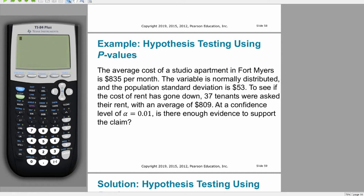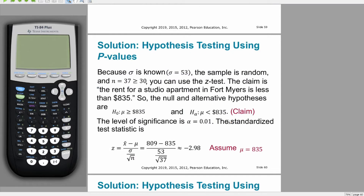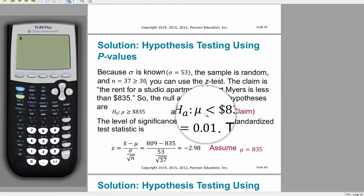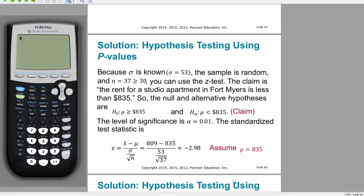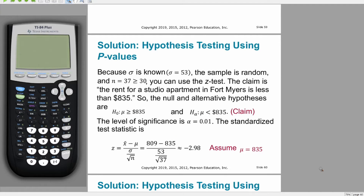We have to be very careful about pulling in all the information we're given and what exactly we're looking for, because we want to see if the cost has gone down. That is our alternate hypothesis, which we make first. Our null is that it has either not changed or gone up.